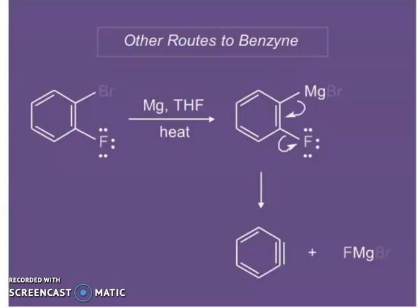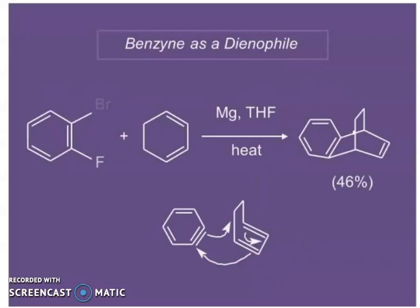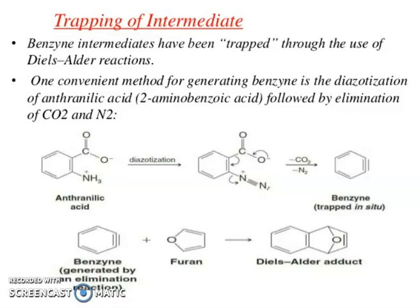Other routes to benzyne exist. Benzyne can act as a dienophile in Diels-Alder reactions. Benzyne intermediates have been trapped through the use of furan as the diene in Diels-Alder reactions, because benzyne acts as the dienophile.